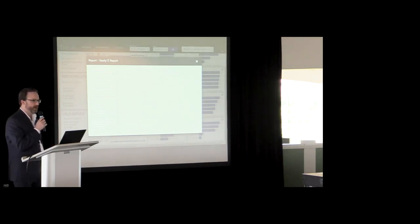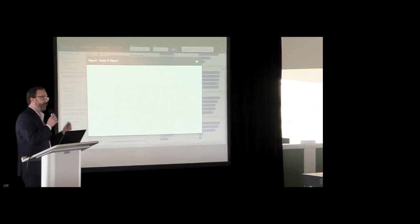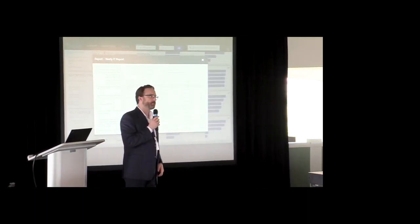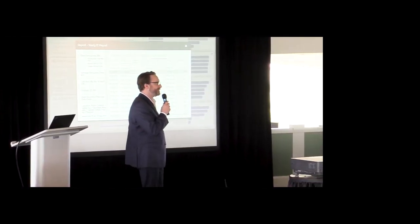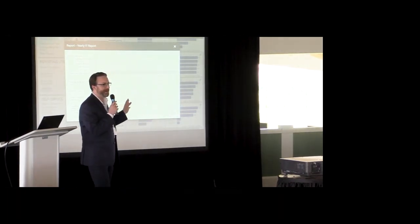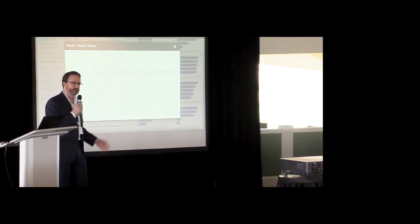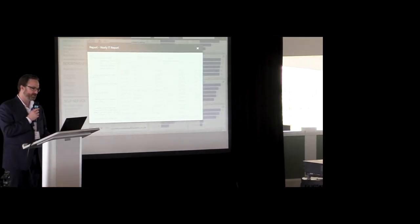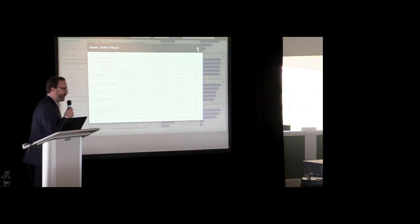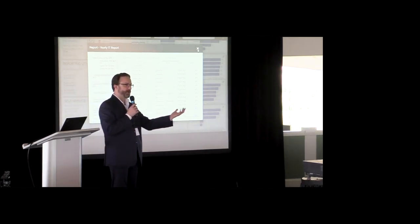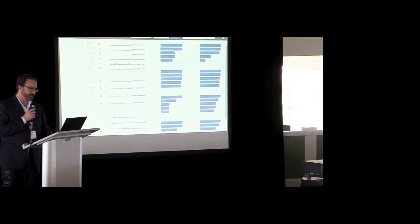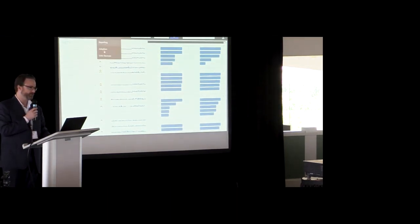From the drill-through I can see average execution time and the data source or sources the report is built off of. In a Cognos 11 world, you can have a report built off of more than one package, or a dashboard built off of many data modules — we capture all that information. I can see the user, number of executions, trend line, and percent of executions that resulted in a failure. Which application server processed that report run is currently shown as an IP address, but in the fall release you'll be able to assign friendly names like CogApp01, CogApp02. You can also download a CSV or Excel of any list in Thrive.